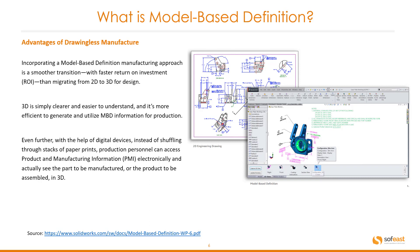With the help of digital devices, instead of shuffling through stacks of paper prints, production personnel can access product and manufacturing information electronically and actually see the part to be manufactured or the product to be assembled in 3D.